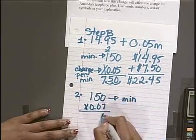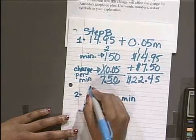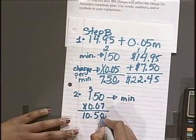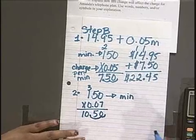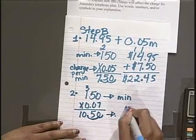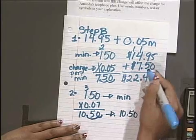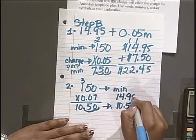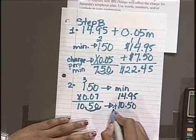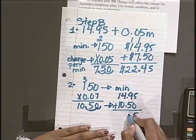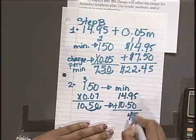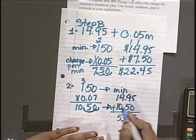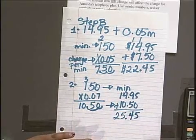And we're going to now multiply the minutes by 7 cents instead of 5 cents. 0 times 7 is 0. 7 times 5 is 35. 1 times 7 is 7 plus 3 is 10. And again I'm going to move my decimal twice from the right to the left. And now we're going to be charged $10.50. Instead of previously the $7.50. And I'm going to add $14.95 to that. Because that's our base charge. $14.95 plus $10.50.